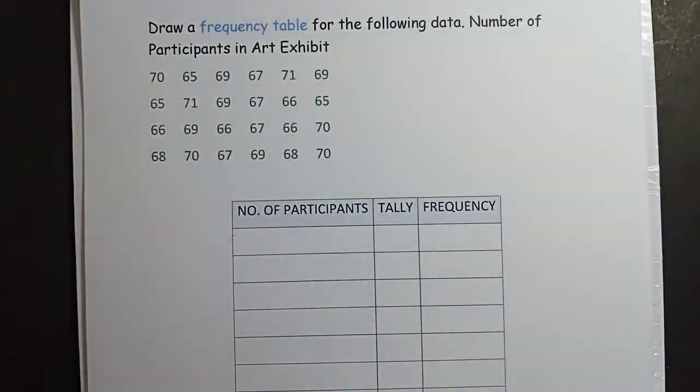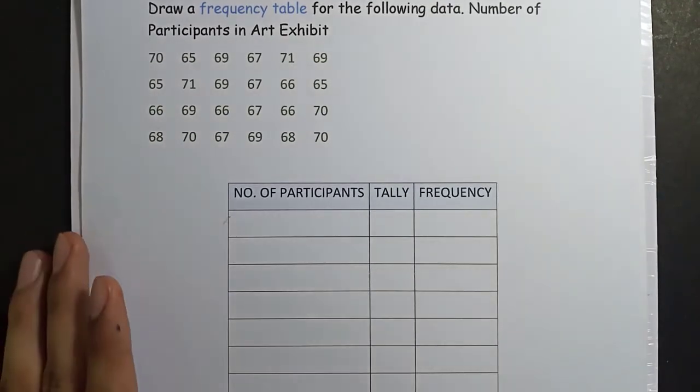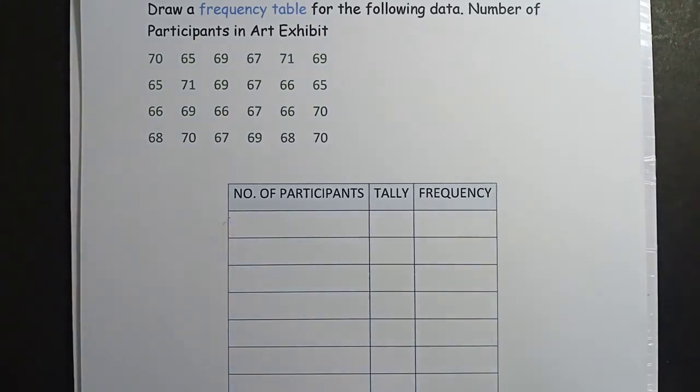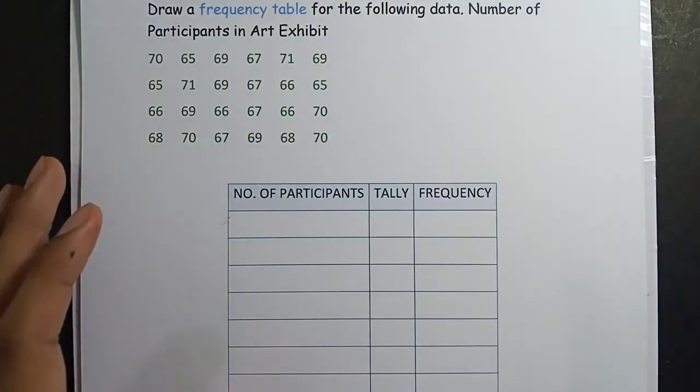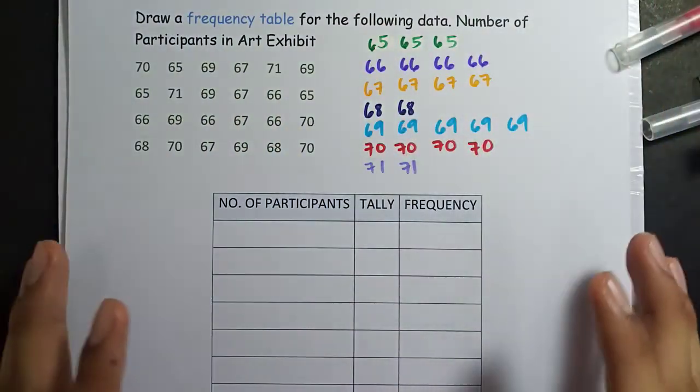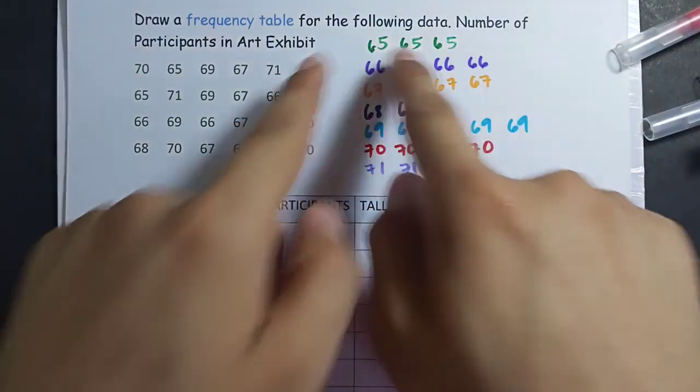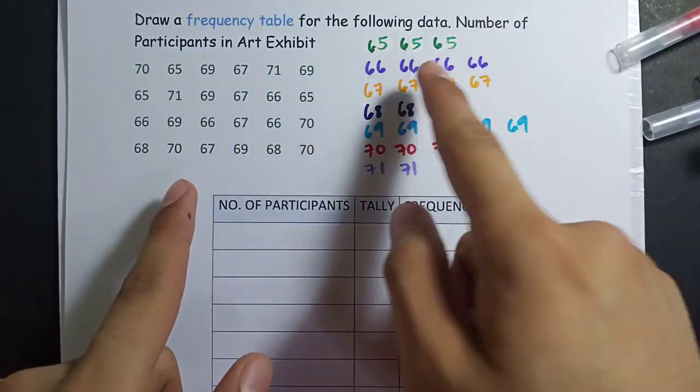Next is the frequency table. Now, how to make a frequency table? Of course, we need to first arrange the dataset again. Then I'll show you the rest later. And I am done arranging this data.